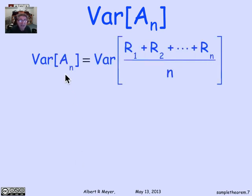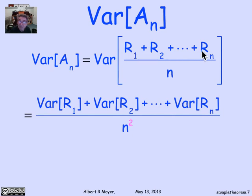Well, let's calculate the variance of A_n. A_n, again, is the average, the sum of the r's over n. And since we're assuming independence of the r's, the variance sum rule tells us that this is the sum of the variances.